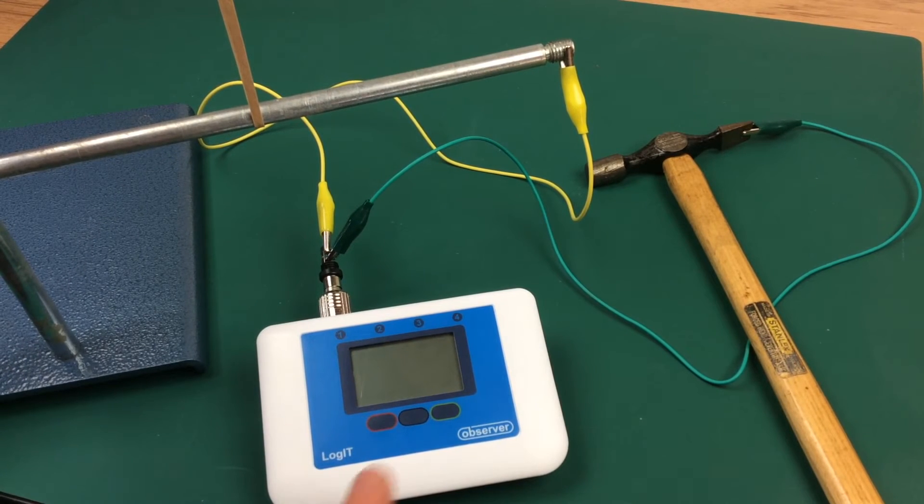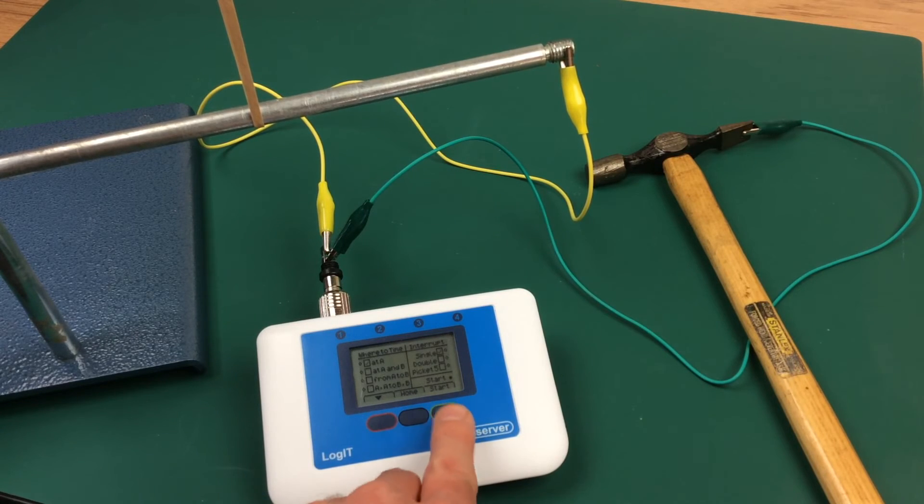Now switch on the observer. And from the menu button, select timing. Select time. And then we're going to use at A with a single interrupt and then press start.